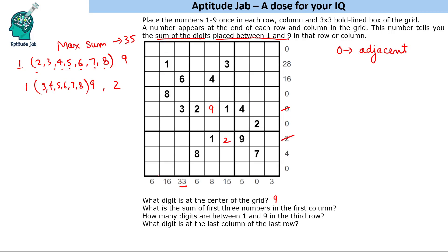Now let us look column-wise. We have 16 — we cannot find those numbers yet. 33 — we will come to it later. 6 — we cannot find it yet. For 8, the only digit possible between 1 and 9 is 8 itself. For 15 we will find out. For the clue 5, we need to find where to put the digits that sum to 5.